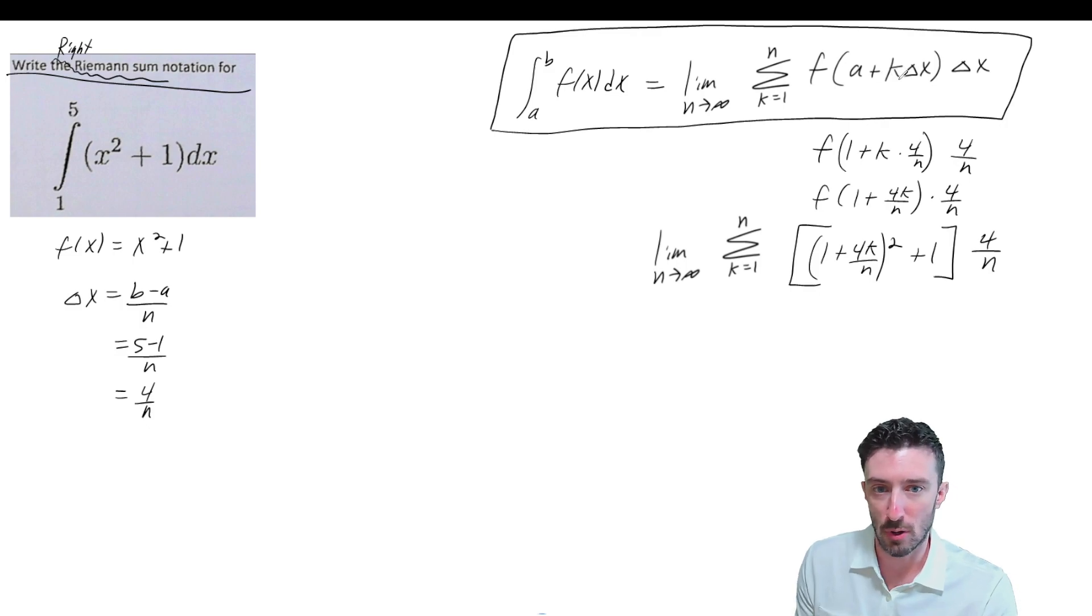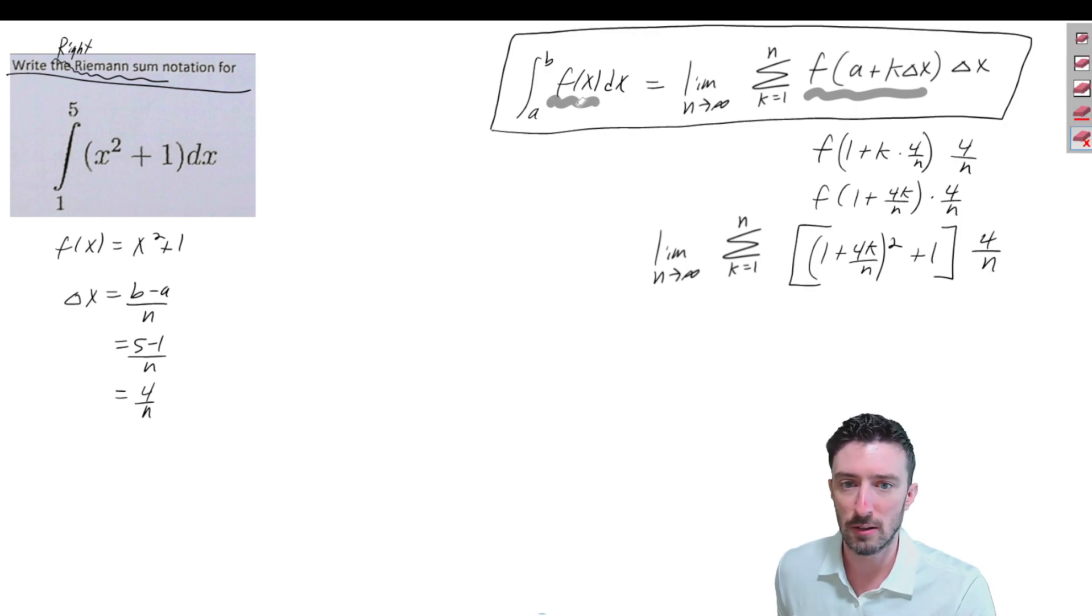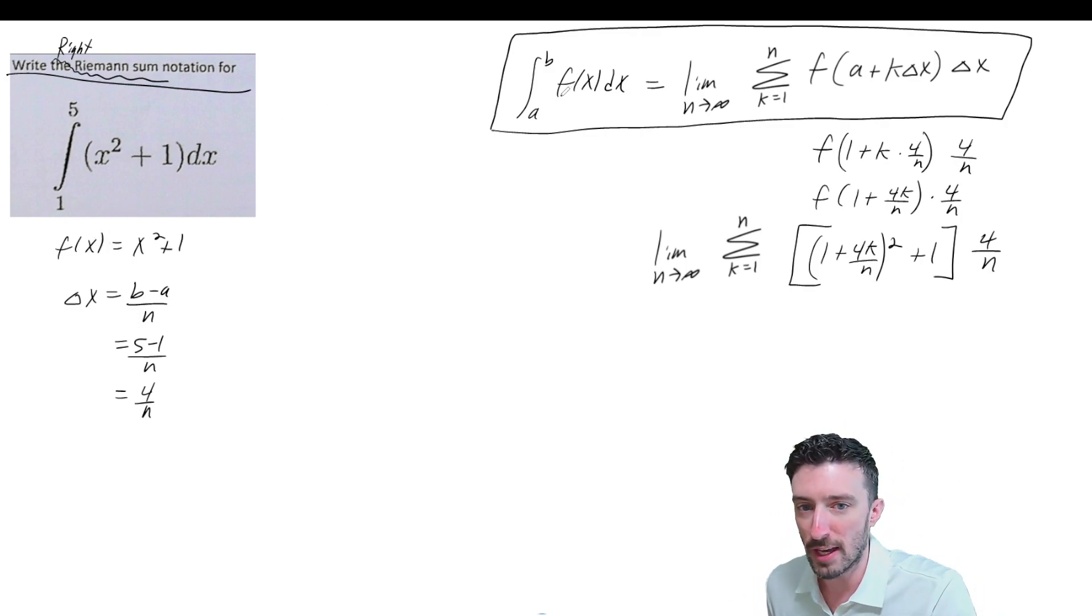Let's start off with how to do it. First thing first is we got to talk about how it kind of looks like this f(X) is matching up with this, and it kind of looks like the dX is matching up with the Delta X.